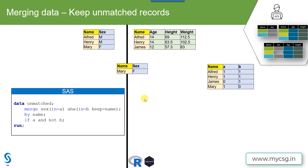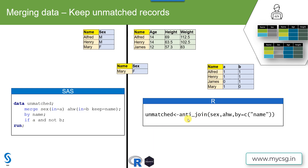Now, how do we replicate this in R's tidyverse? We have something called anti_join in the tidyverse package which gives us the same result. We need to specify the first dataset as the first argument, the second dataset as the second argument, and the by variable as the third argument. What anti_join does is filter only the name values that are exclusive to the first dataset but not present in the second dataset, replicating the same logic. One thing to note is that since we are keeping only records exclusive to SEX, all variables coming from the second dataset will have no meaning.